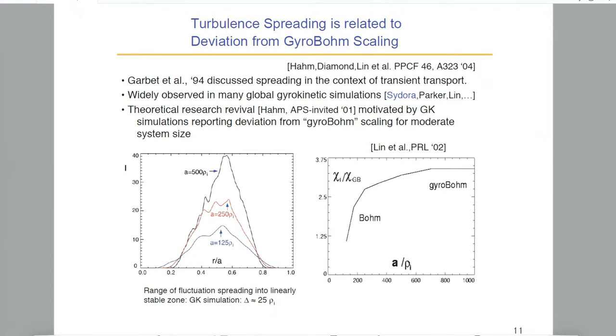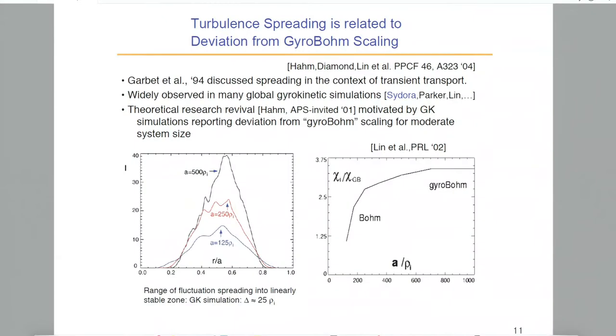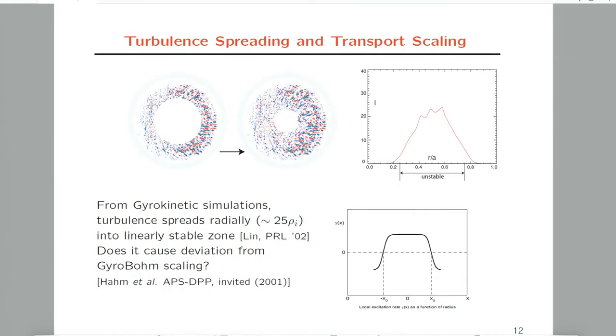In summary, if we did not have turbulence spreading, from theory—regardless of experimental truth—if we do theory we somehow get gyro-Bohm scaling. But due to turbulence spreading, when system size is rather small, we get Bohm-like scaling, because the extent of turbulence spreading scales with gyro-radius, not the system size.